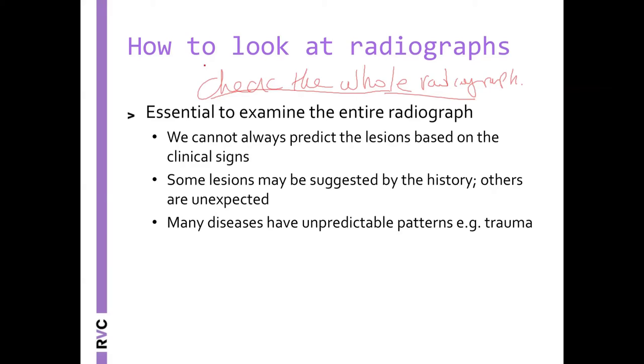But first of all, why do we need to check the whole radiograph? One, we cannot always predict the lesions based on the clinical signs. For example, you may have a dog with lethargy. Does this guide you to a particular sign? Not really. Some lesions are suggested by the history. For example, they could feel a lump in the abdomen. Others are unexpected. You know, the animal was out, came out, didn't look well, but we don't know what happened.